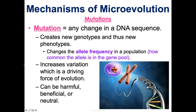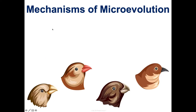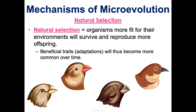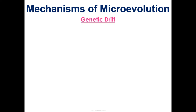Natural selection: organisms that are more fit for their environment will survive and reproduce more offspring, so beneficial traits become more common over time. This is what we saw with Darwin's finches on the Galapagos Islands — they had certain traits suited to their specific island environments.